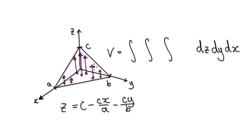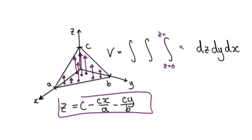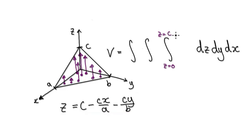So everything here moves parallel to the z axis. If you want to move parallel to the z axis first, you have z going from z equals zero up to z equals the plane. So you stop at z equals the plane, and the equation of the plane gives us z equals c minus cx/a minus cy/a.